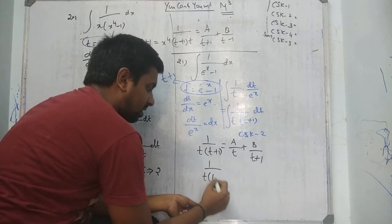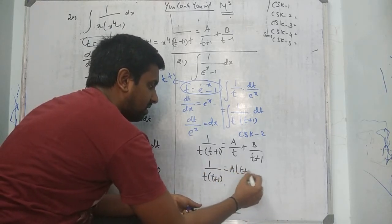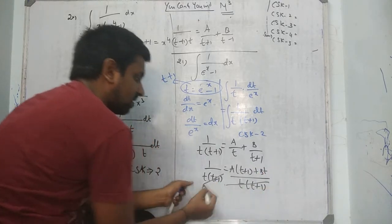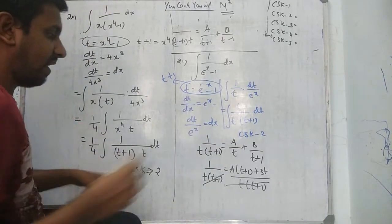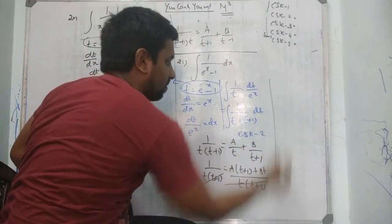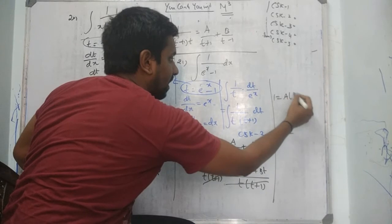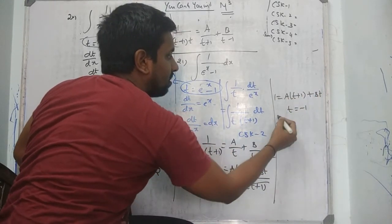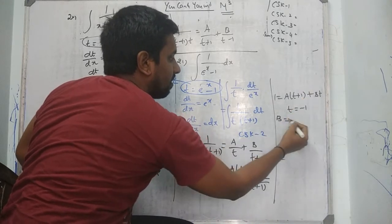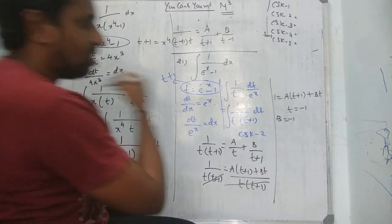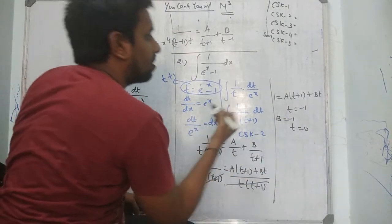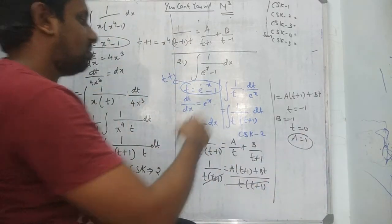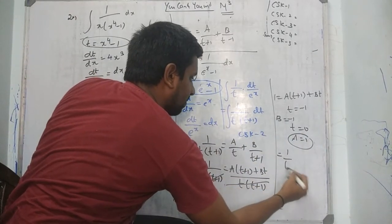Normal LCM: 1 equals A times (t + 1) plus B times t. Put t equal to minus 1: B value is minus 1. Put t equal to 0: A value is 1. Substitute these values.